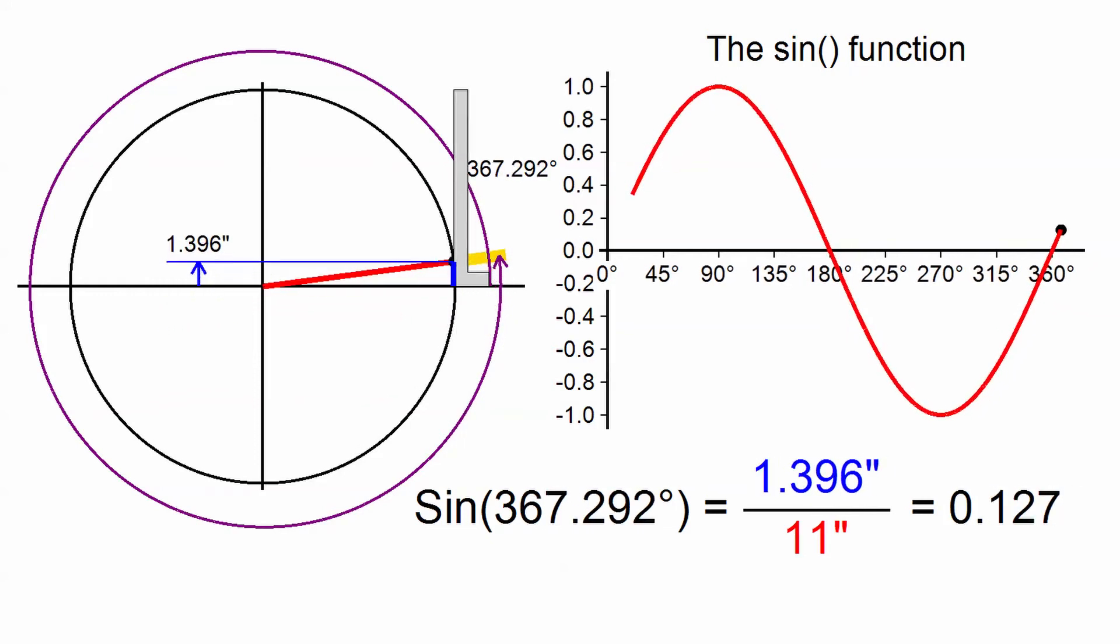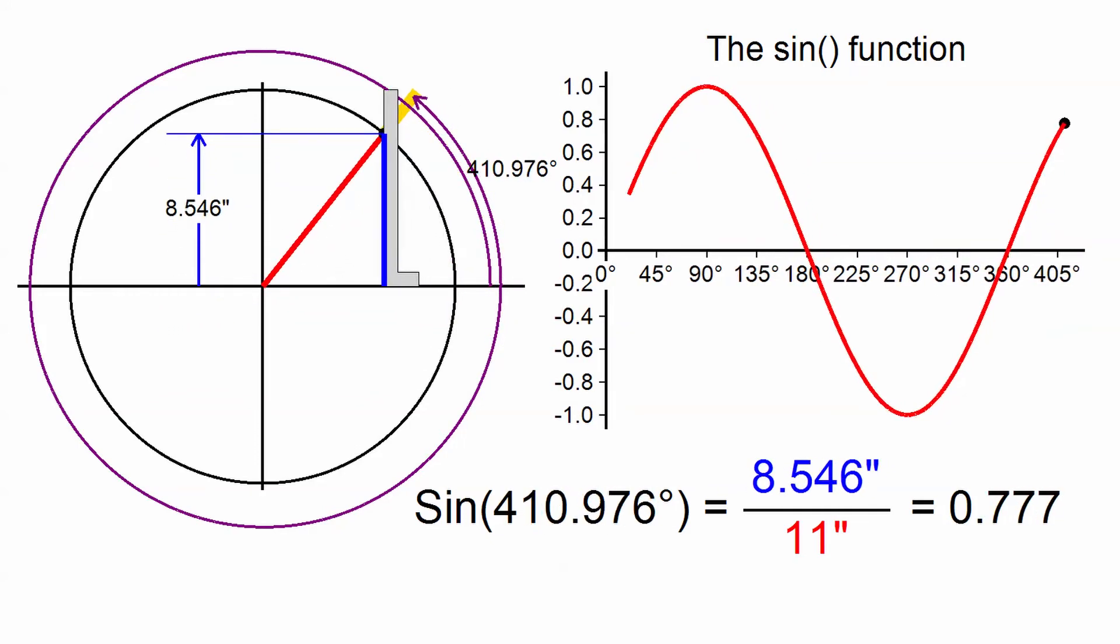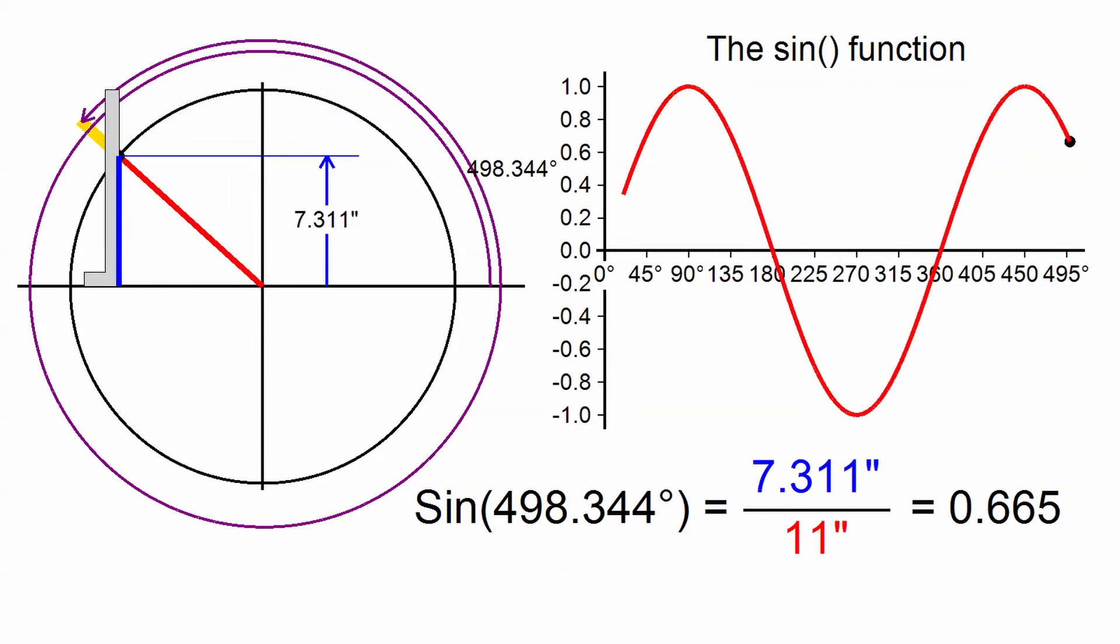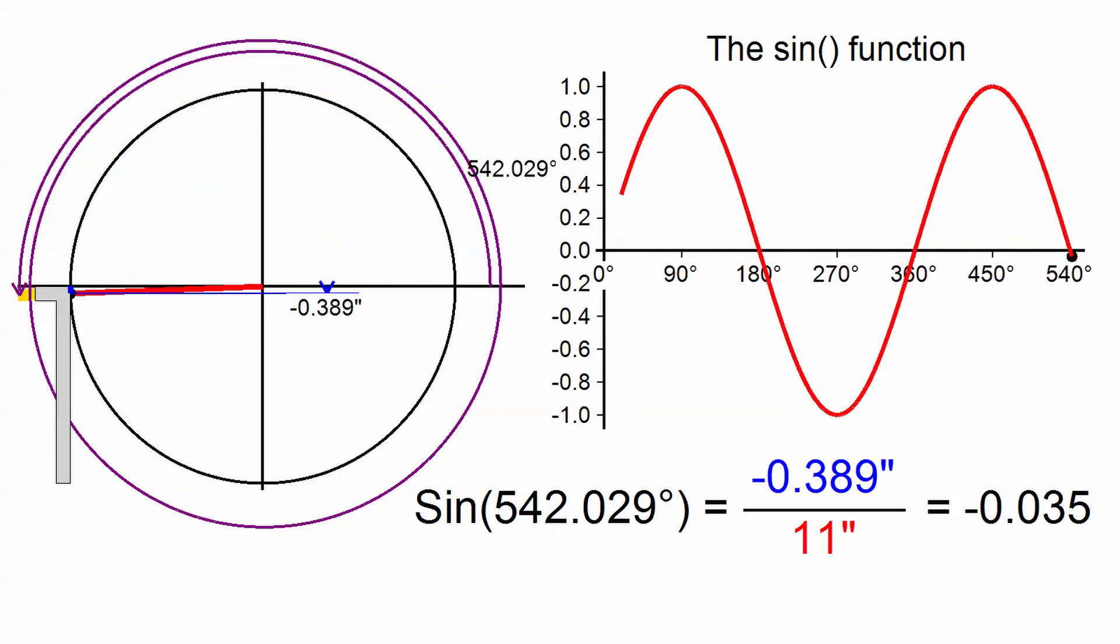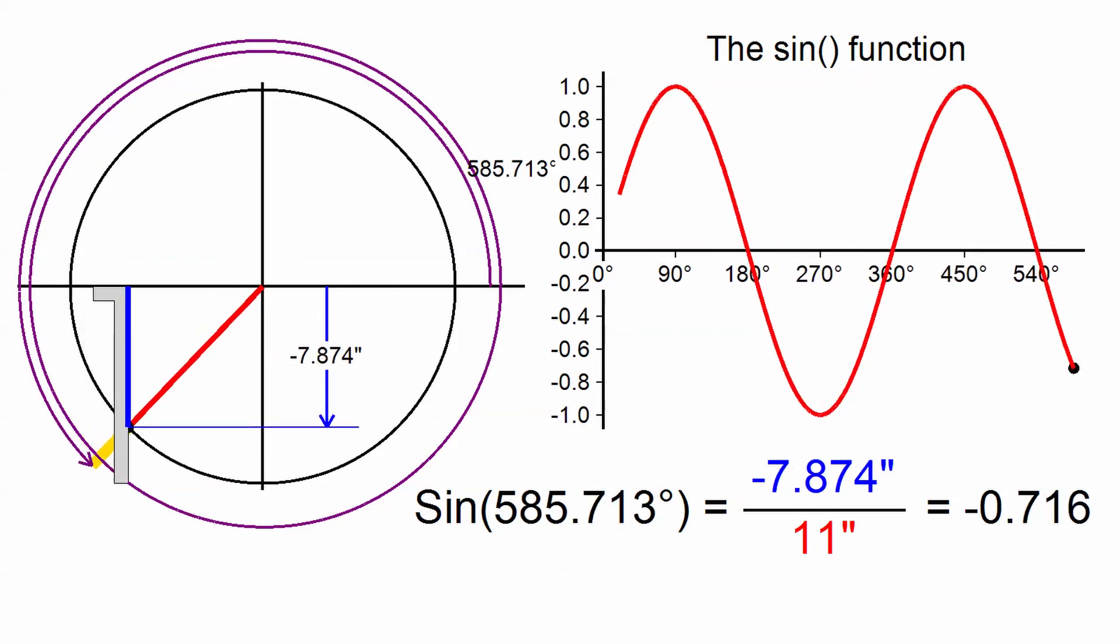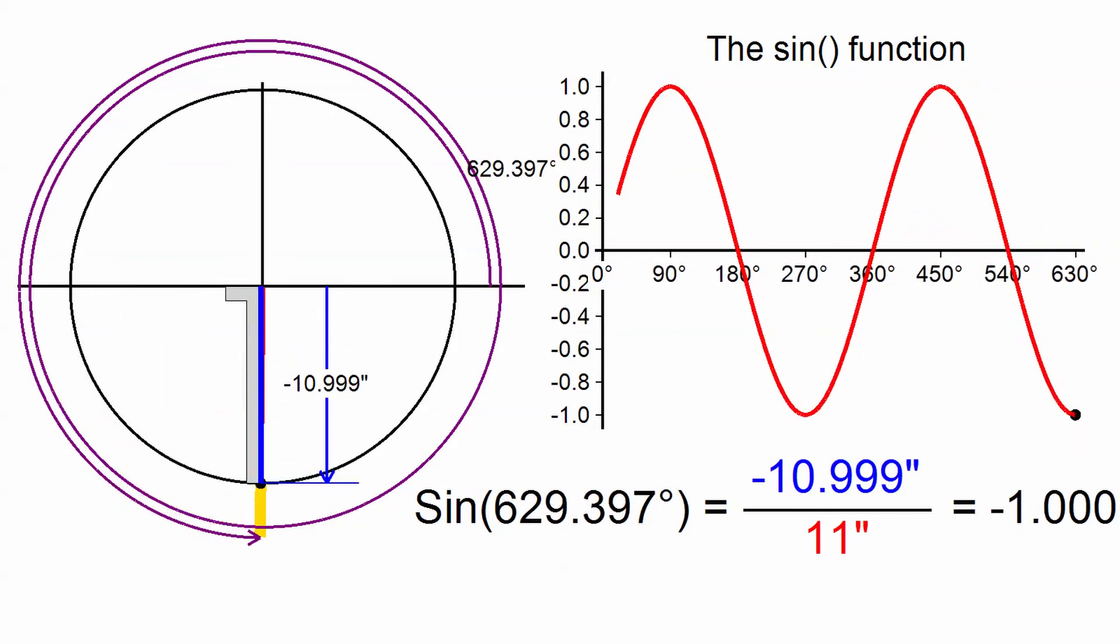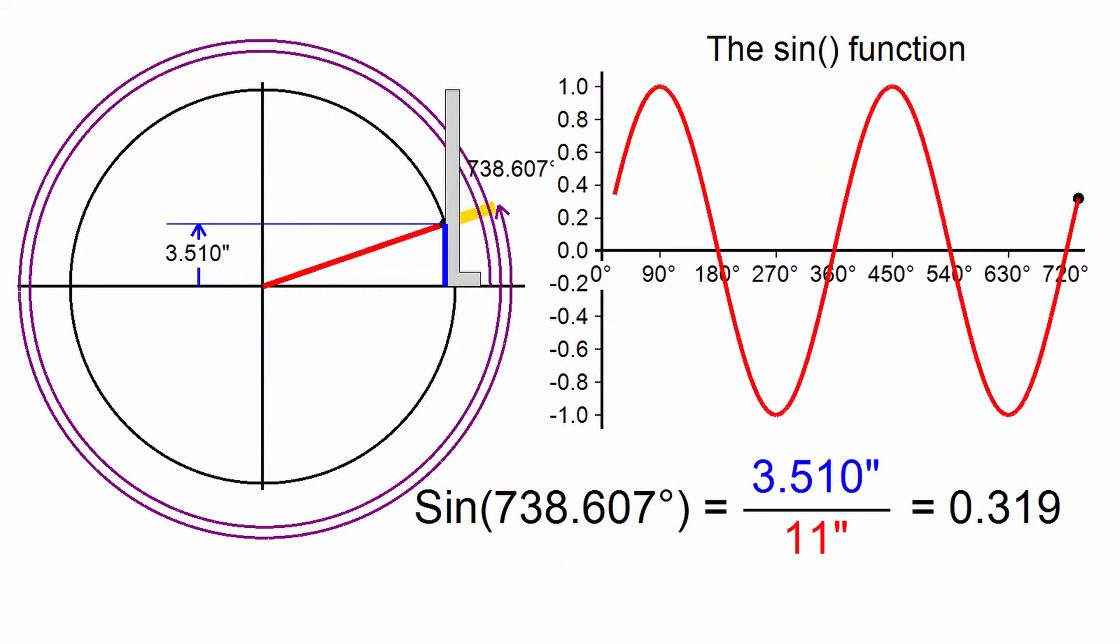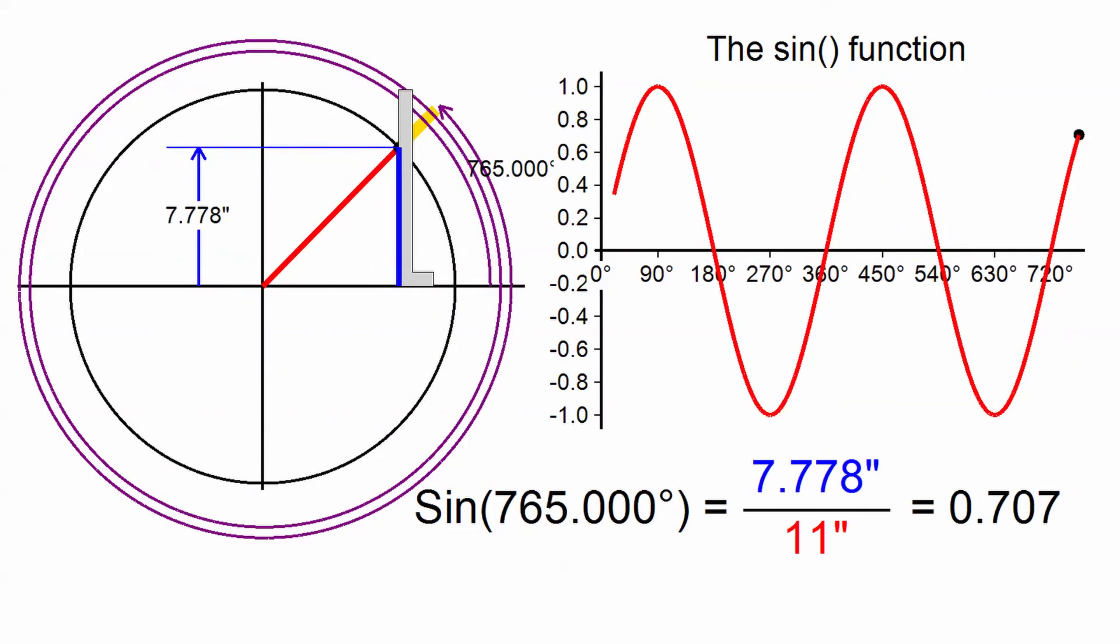Let's push on through 360 degrees and into a second circumnavigation of the wheel. Notice that we're retracing the same steps we took before. All the angles are now 360 degrees bigger than they were during the first time around, but the values of the sine function are the same. We can even continue into a third revolution. In fact, we could go on indefinitely.